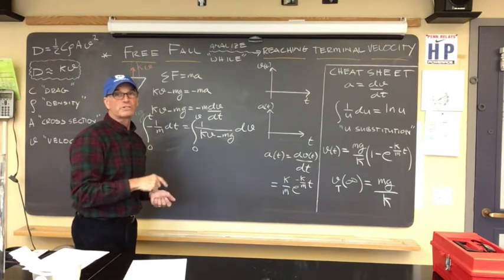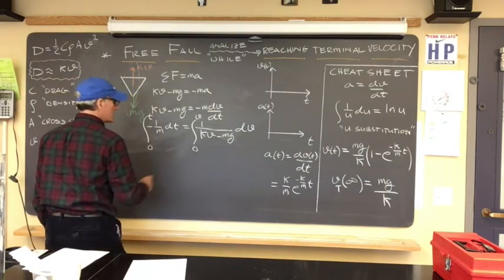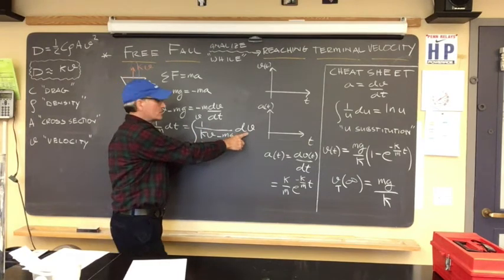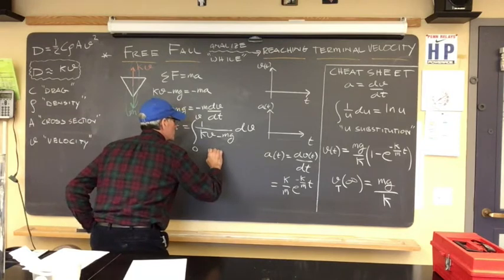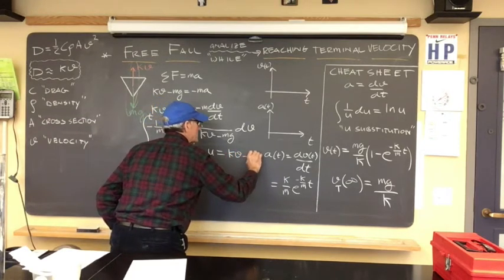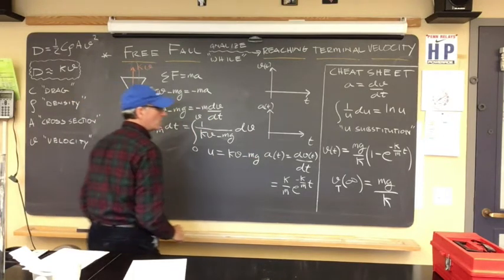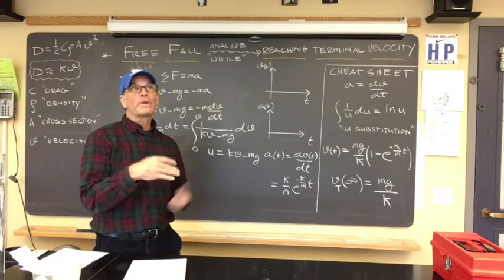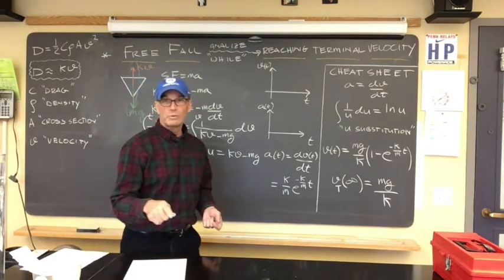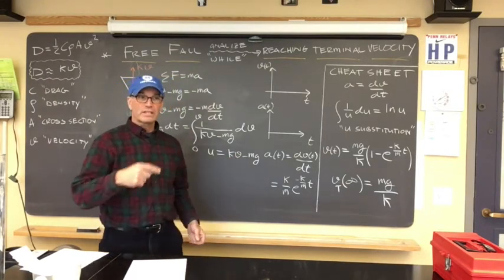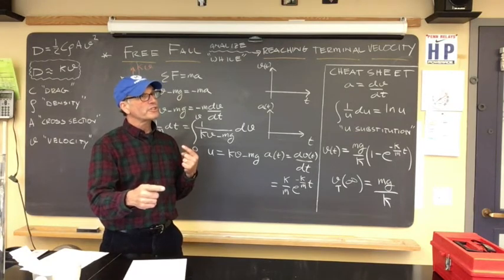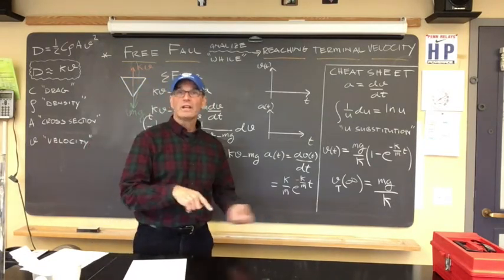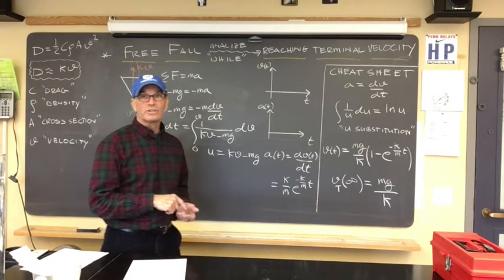At this point we're going to integrate both sides. Let's discuss the limits of integration. If I drop an object from rest at t equals zero, then the lower bound of these integrals — the initial condition — will be zero time and zero velocity. But let's simplify: we're going to start from rest. The upper bound is going to be some time t later, with some velocity v — but not terminal velocity. We're looking at the period in between: from when you drop it from rest until it reaches terminal velocity.